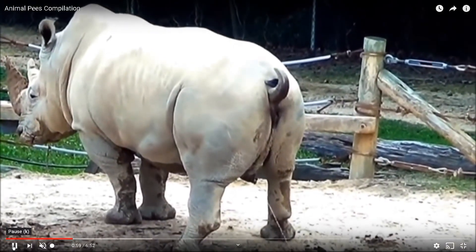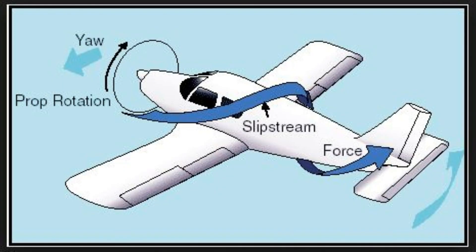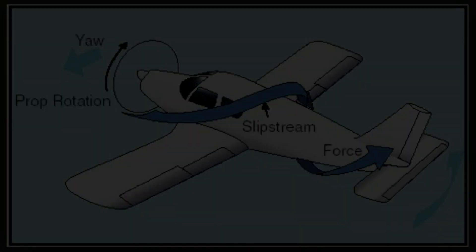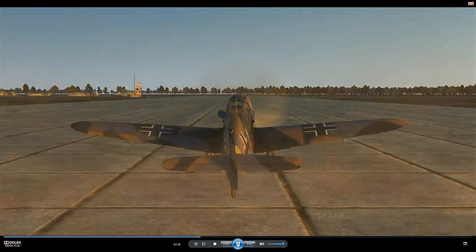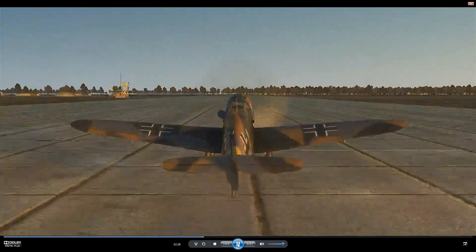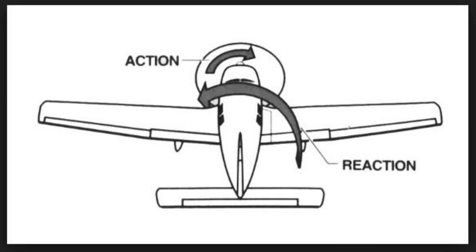There are several factors at work here. As the prop rotates it sends a helical column of air around the fuselage which impacts on one side of the aircraft — hence the tendency to yaw to the left. This is slightly more pronounced on a tailwheel aircraft, because asymmetric thrust is created because the ascending blade and the descending blade have different angles of attack.